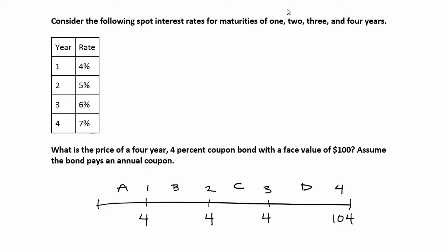In this example we're going to be pricing a bond based off the term structure of interest rates. I've plotted the spot rates for different maturities — these are the rates based off bullet bonds. For the one with year equal to four, that means a zero coupon bond with a maturity of four years has an annual interest rate of 7%. Note that these are not APRs with semi-annual compounding periods; we're simplifying and saying this is a 7% per year interest rate.